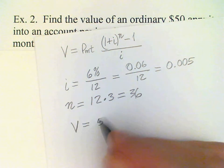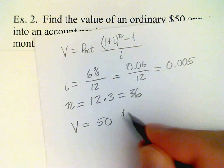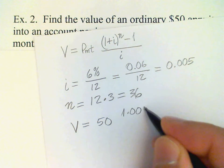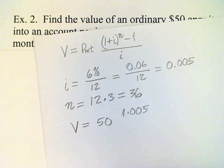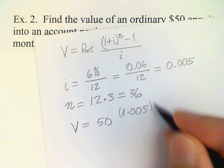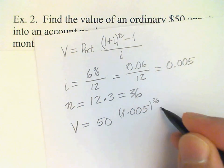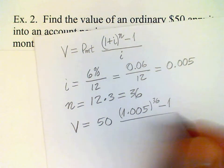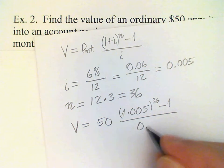The value is $50 times 1.005, that's 1 plus I, and we have to raise that to the 36th power, subtract 1, and then divide that by 0.005.